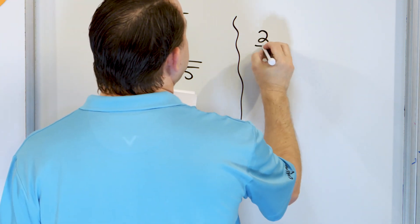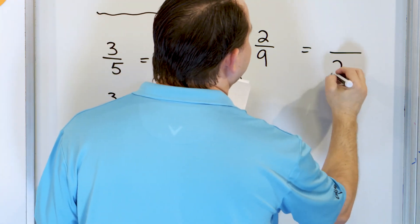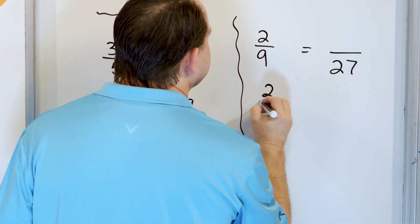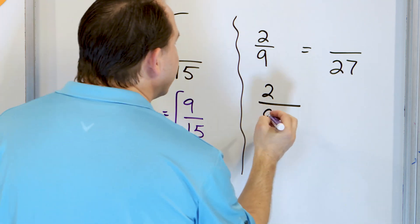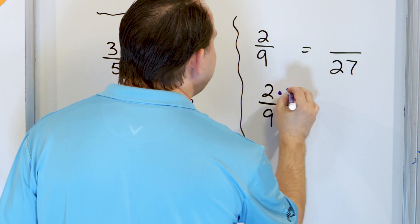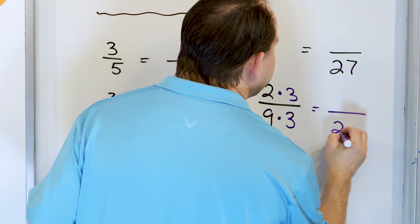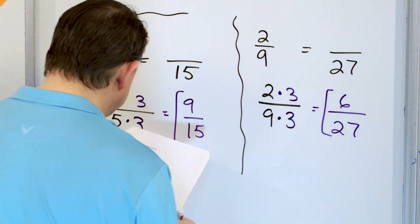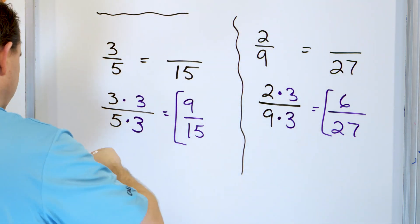Let's take a look at 2/9, and we have an equivalent fraction with a 27 in the denominator. We can take this fraction 2/9 and multiply top and bottom by anything we want — but we know we're going to want to multiply by 3. Why? Because 9 times 3 is 27. So in the answer we'll get our 27, and 2 times 3 on the top is 6. So the fraction 6/27 is exactly the same as 2/9.